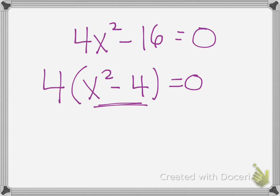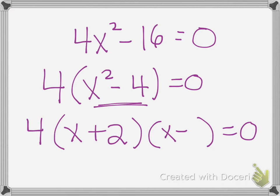I still have the difference of two squares. This 4 just hangs out with us, and we have x plus 2, x minus 2. So my solutions are negative 2 and positive 2. And this 4, all it does is make everything 4 times bigger, it doesn't affect the solution.